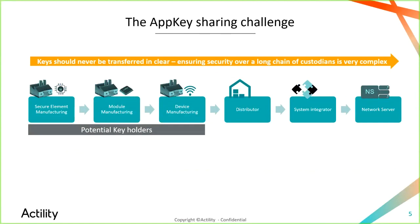Even after manufacturing, there is a different chain of custodians: distributors, warehouses, resellers, retailers, system integrators who provide installation and support, and the network operator itself — which for B2C can be an important player in installing devices for large enterprises. And finally, the end user, the company or person using the product and service.